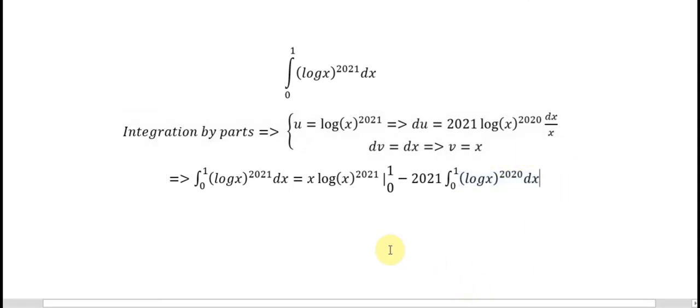If you see that, when we put 1 in here, they will become 0. We put 0 in x, they will become 0. So we have 0 minus 2021, and similar to this one.